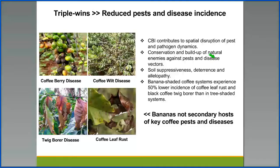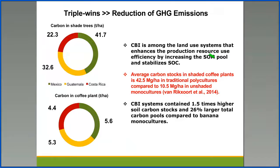Because bananas are not secondary hosts of key coffee pests and diseases, the coffee-banana intercropping system contributes to spatial disruption of pest and pathogen dynamics. It also contributes to the conservation and build-up of natural enemies against these pests and diseases, as well as soil natural suppressiveness, deterrence, and allelopathy. In this regard, banana-shaded coffee systems experience 50% lower incidence of coffee rust, leaf rust, and black coffee twig borer than in tree-shaded systems.